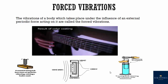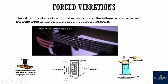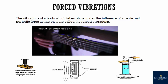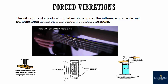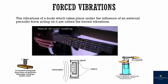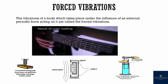The third type is forced vibration: the vibration of a body that takes place under the influence of an external periodic force acting on it is called forced vibration. When a stem of a vibrating tuning fork is pressed against the top of a table, the tuning fork forces the table top to vibrate with its own frequency — these are forced vibrations. Similarly, the vibrations produced in the diaphragm of a microphone or sound box at frequencies corresponding to the speech of the speaker are also forced vibrations.